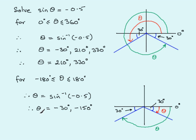So for the range minus 180° to 180°, the two solutions for theta are minus 30° and minus 150°.